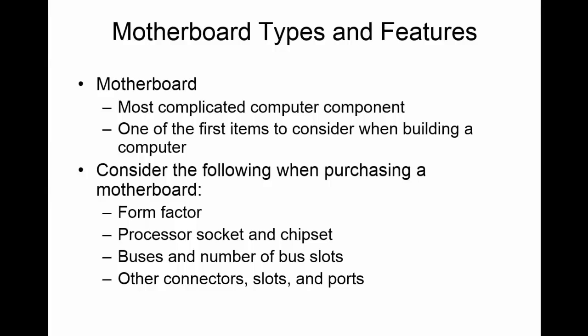Of all the parts of your computer, the motherboard is definitely the most complicated computer component. This is one of the first things considered when building a computer for yourself. Consider the following when purchasing a motherboard: what type of form factor are you using, the processor socket and chipset, the buses and number of bus slots available, and other connectors, slots, and ports — such as video — and whether you'll have enough USB ports.